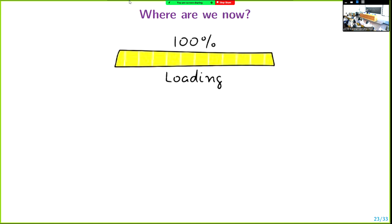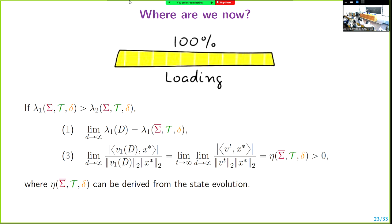So basically we're done. I give you the limit of lambda_1 of D. I can now compute the overlap between the eigenvector and x-star by replacing the eigenvector by my iterate, and my iterate I have good control over — I know it's going to be a Gaussian. Computing that, you get some formula called eta, and it happens to be strictly positive whenever the condition lambda_1 > lambda_2 holds.